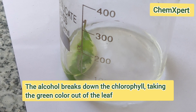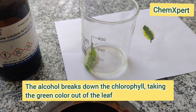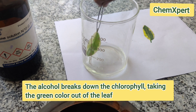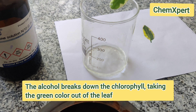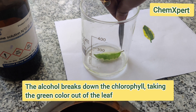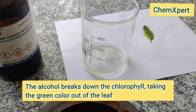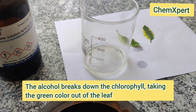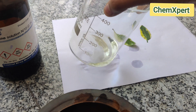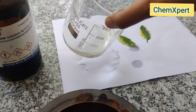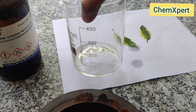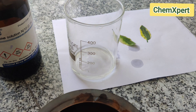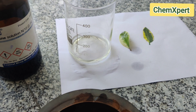You can observe that the solution becomes slightly green in color. When we remove the leaf from the alcohol solution, the solution changes color — initially transparent, it becomes light green because it now contains chlorophyll.